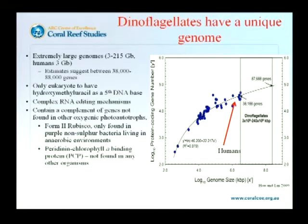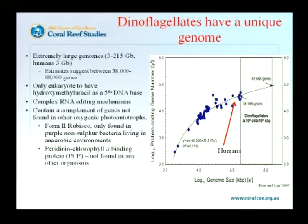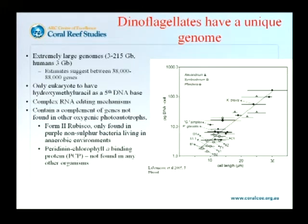There are also recent studies using regression analysis and high-throughput sequencing suggesting that dinoflagellates have anywhere between 38,000 and 88,000 genes. Putting that in context, humans have between 20,000 and 25,000. Luckily for us, if we look at dinoflagellates as a whole in terms of genome size or how much DNA they have, symbiodinium is probably the dinoflagellate with the smallest amount of genomic information.